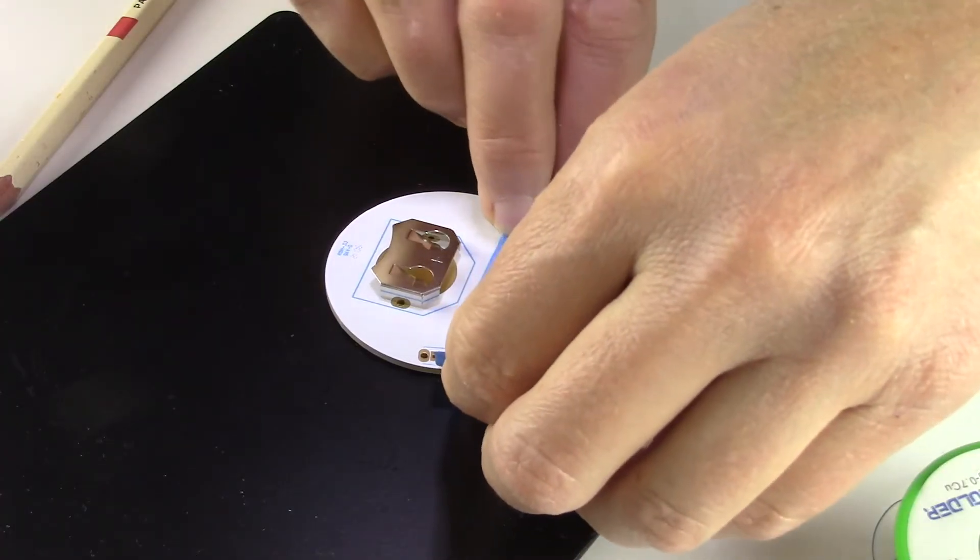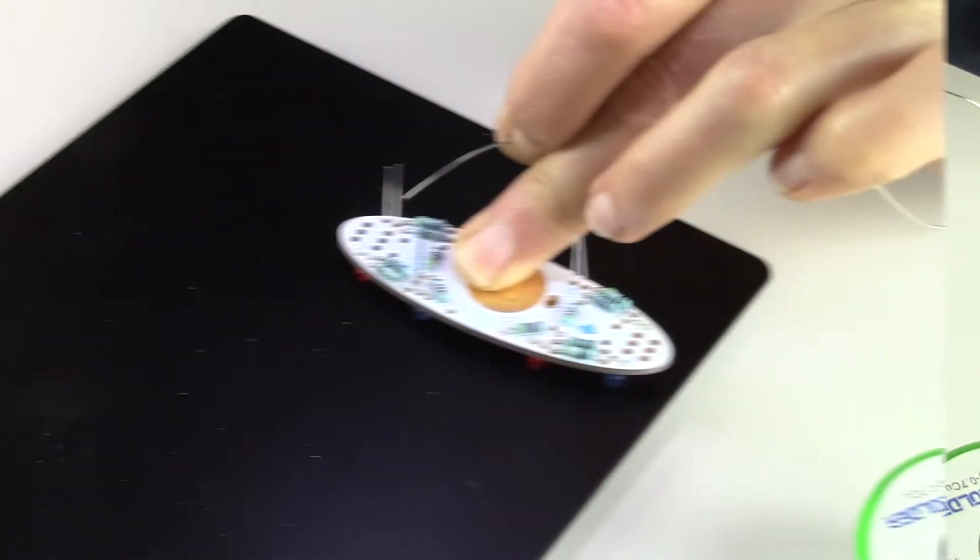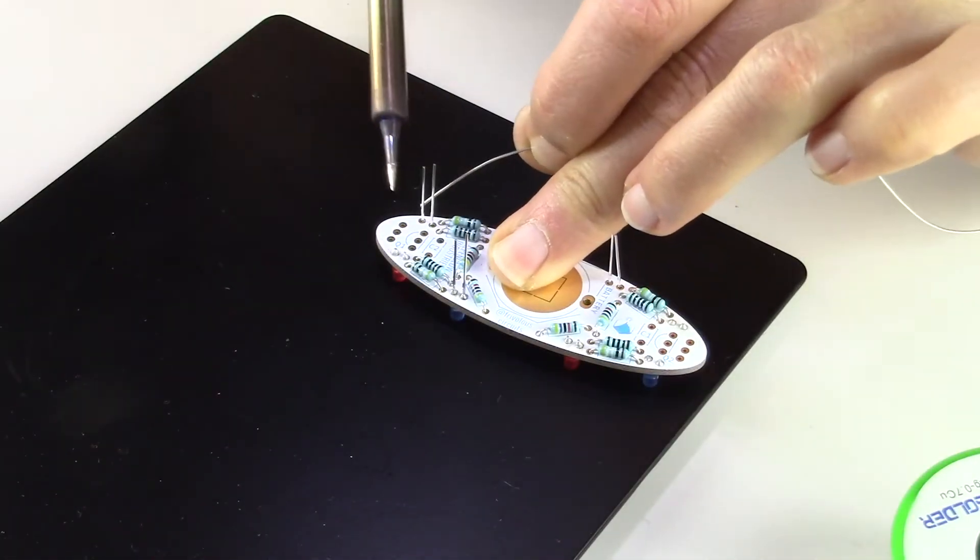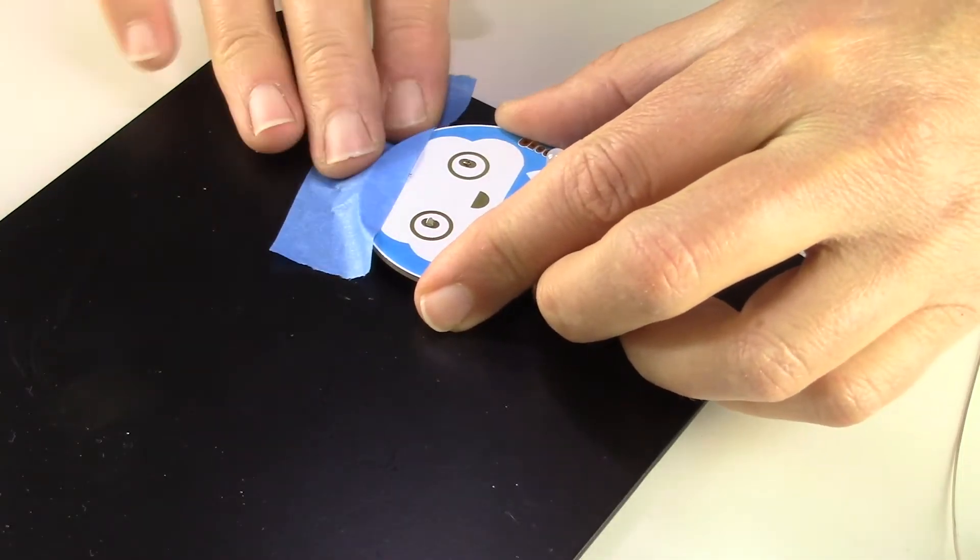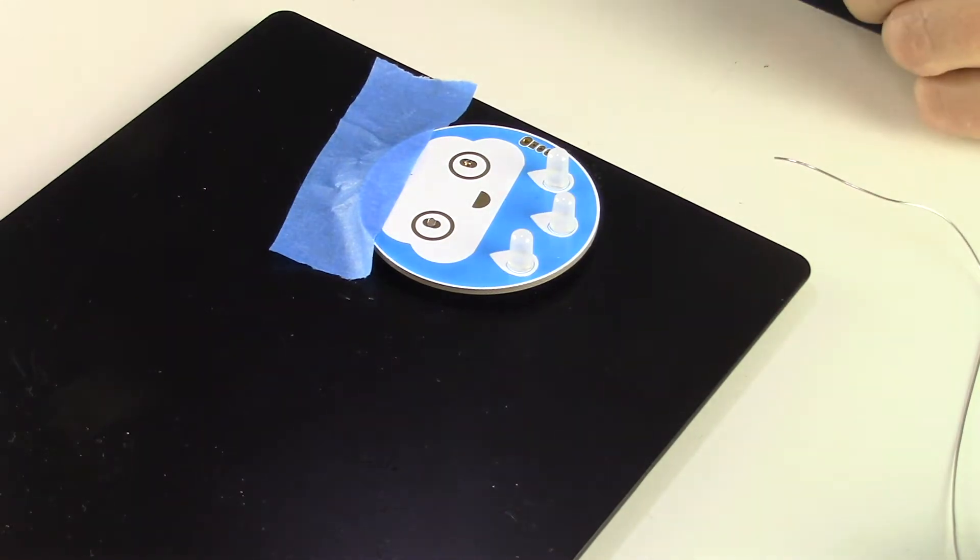Tape your circuit board down so it doesn't move. With more practice and dexterity, you can use another finger on your solder holding hand to also hold down the board, but it's easier to learn if the board is firmly attached to the table and doesn't wiggle around.